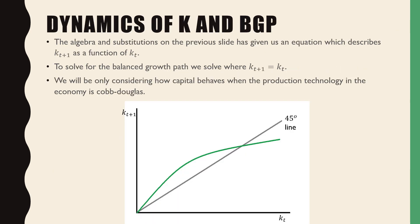Now let's talk about the dynamics of K and the balanced growth path in this model. The algebra and substitutions on the previous slide have given us equations to describe KT+1 as a function of KT — future capital per effective labor as a function of current capital per effective labor. To solve for the balanced growth path, we solve where KT+1 is equal to KT. We'll be considering how capital behaves when production technology uses Cobb-Douglas production, because this concave shape does not hold for all production functions — it could be convex or any other shape.